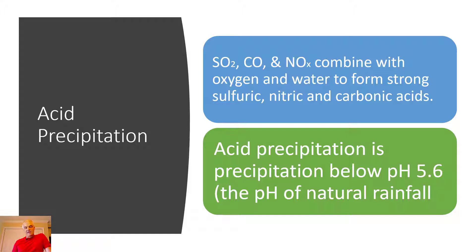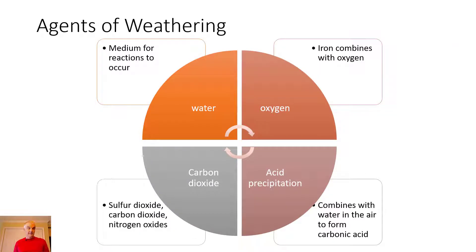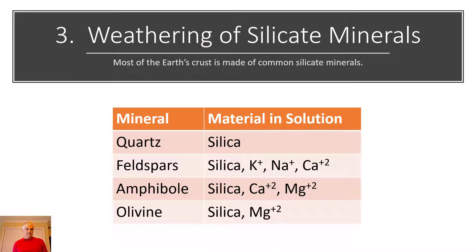Let's expand a bit more on acid precipitation. Not only does a raindrop pick up oxygen and carbon dioxide, but there are other chemicals in the air — SO2, carbon monoxide, and nitrogen oxides (NOx). These can form stronger acids and create all kinds of issues. If the pH is below 5.6, it's classified as acid rain.